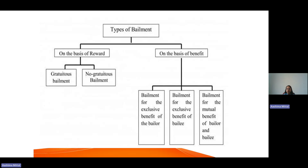Coming to the third type: bailment for the mutual benefit of the bailor and bailee. In this, both parties are benefited. For instance, when we give a piece of cloth to a tailor for stitching, we are the bailor and the tailor is the bailee. We get the benefit of stitching, and in exchange he gets money for it. So it is a win-win situation for both — he gets his money and we get our suit stitched. Both parties are benefited, so that becomes bailment for the mutual benefit of the bailor and bailee.